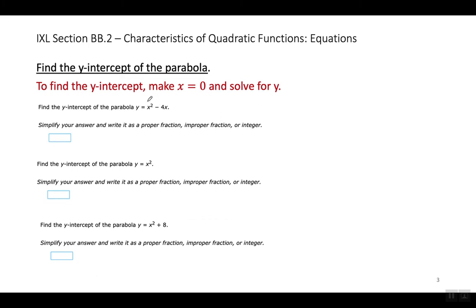Look at this one. What is the Y-intercept here? If I make X equal to 0, what number is back here? There's nothing back there. If there's nothing back there, that's the same as having zero back there. The Y-intercept is 0.